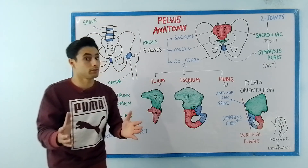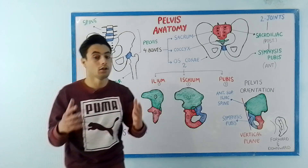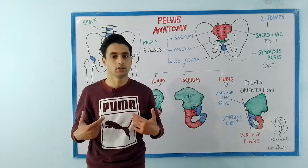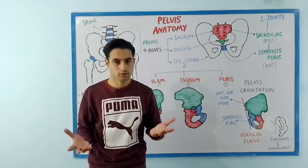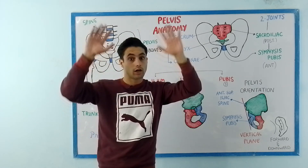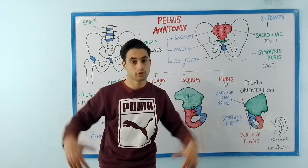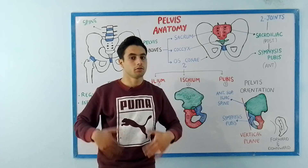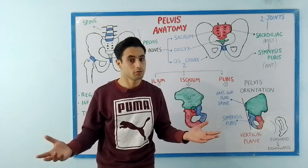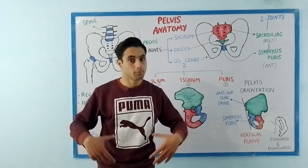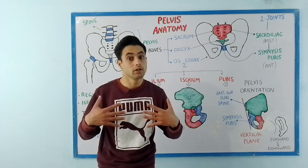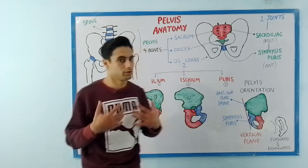How would you define what is trunk? Trunk is the part of the body apart from your head, neck, upper limbs, and lower limbs. So the structures which are left are included in the trunk: pelvis, vertebral column, and the ribs.